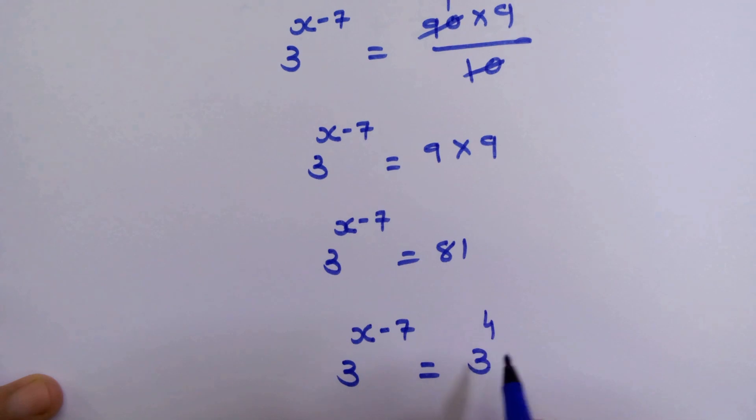81 is equal to 3 raised to 4, so we can write it like this. Now we have the same base, so we can equate the exponents. So our next step will be x minus 7 equals 4.